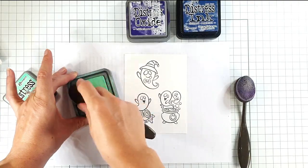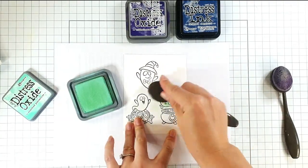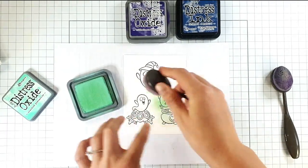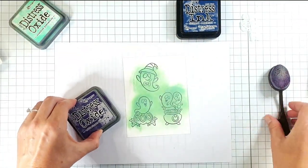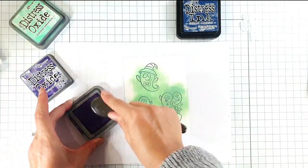So I'll bring in some scrap paper and I'm going to take the Cracked Pistachio first and I'm just going to add that right around the ghosts. So then I'm going to add some Villainous Potion around that.